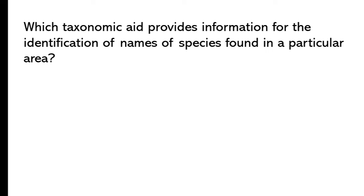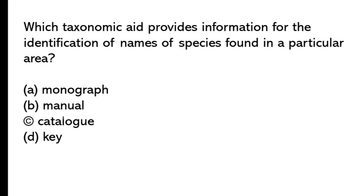Which taxonomic aid provides information for the identification of names of species found in a particular area? Monograph, Manual, Catalog, Key. So the correct answer is option B, Manual.